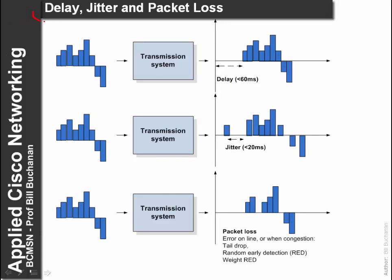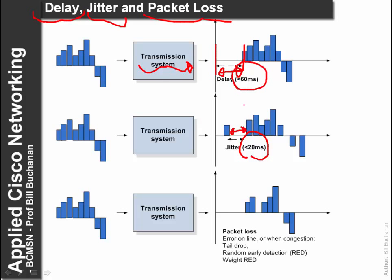The key metrics that we use for quality of service are delay, jitter and packet loss. With delay, the amount of time it takes to be transmitted over the system actually matters — in this case we have created a delay of 60 milliseconds. If this delay is too great, the connection can actually drop. Jitter depends on the variation between transmitted signals; in this case the jitter must be less than 60 milliseconds. A delay should be less than 60ms and jitter should be less than 20 milliseconds.